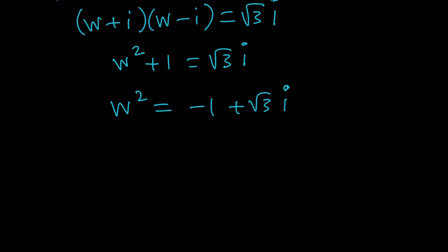And then from here, we can try to find the square roots of negative 1 plus root 3i. Let's go ahead and think about it. Do you think we can come up with a complex number whose square would be this? I'm going to write this in polar form.